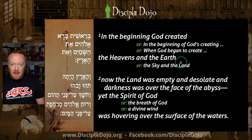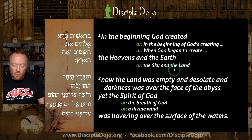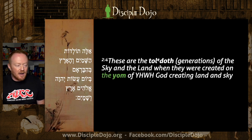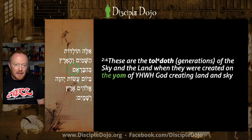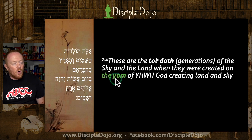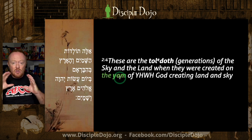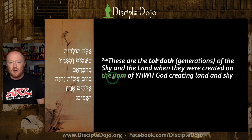In the beginning God created — what? The heavens and the earth. Now let's unfold this process. This is what it was like when God began to create the heavens and the earth, and the creation week unfolds. Now at the end: these are the generations of the heavens and the earth, ha-shamayim v'ha'aretz — when they were created on the day of Yahweh God creating land and sky. All of the creation events, everything, all of these yoms, are now denoted with a singular day — in the day of God's creating.